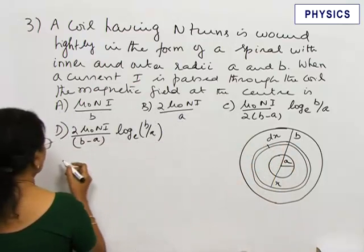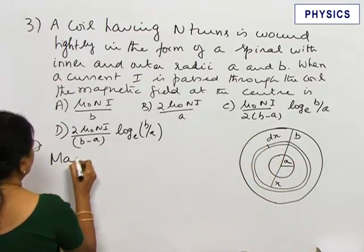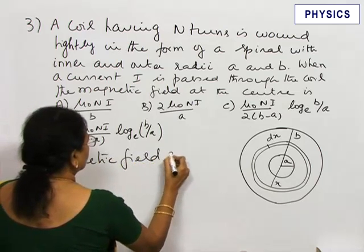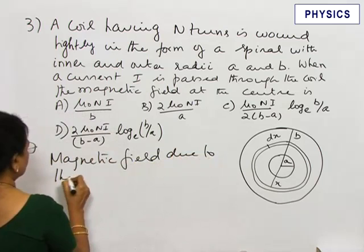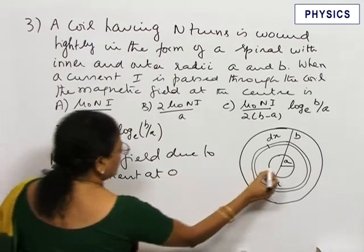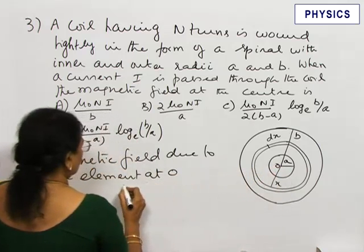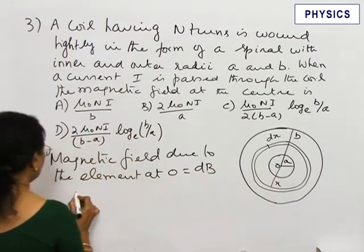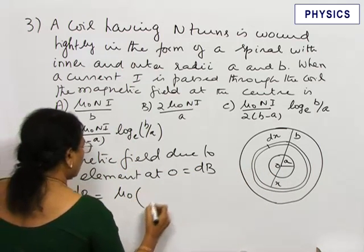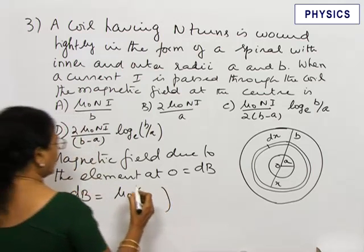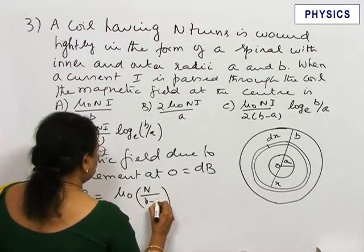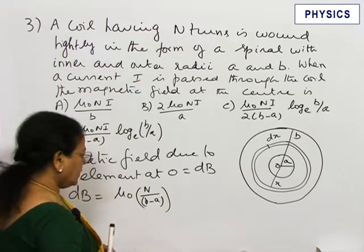Let us write the magnetic field due to this element at the center. The magnetic field due to the element at O, the center, equals dB. dB equals mu naught n, where n is the number of turns per unit length. So here n by B minus A into dx.